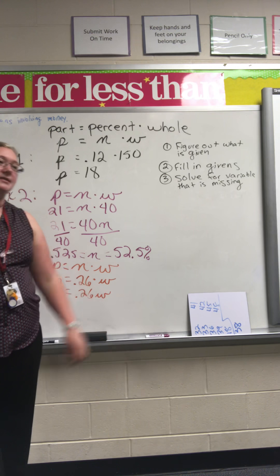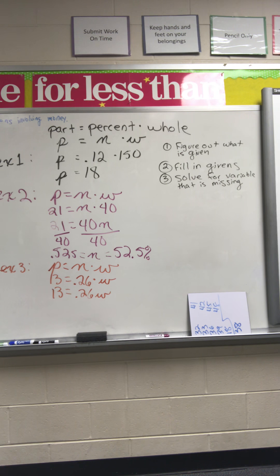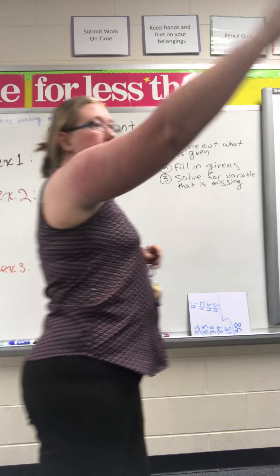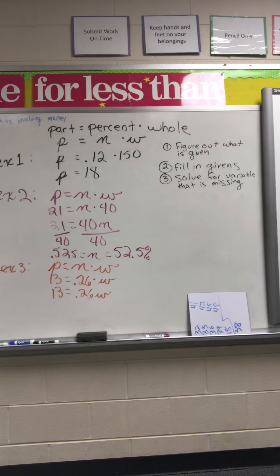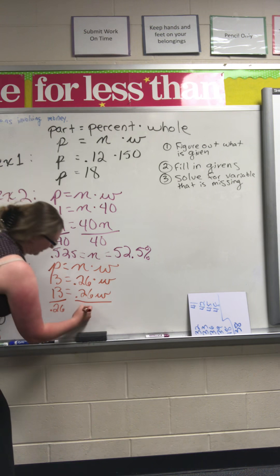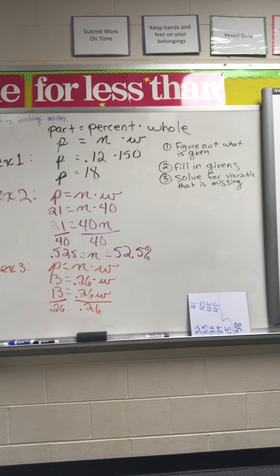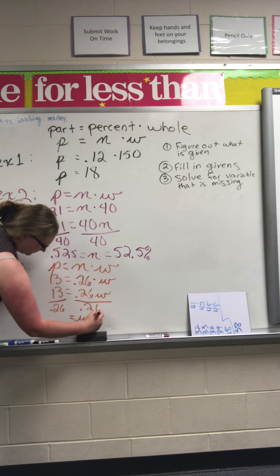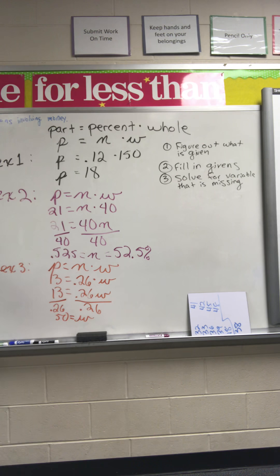Now what do I do? I have to get my variable by itself. You divide by 0.26. Why do I divide by 0.26? Because that's the value next to the variable. Very good. And what is 13 divided by 0.26? 50. So that means that 50 is my whole.